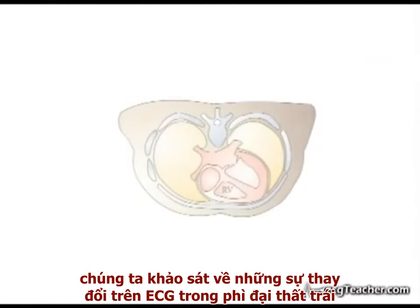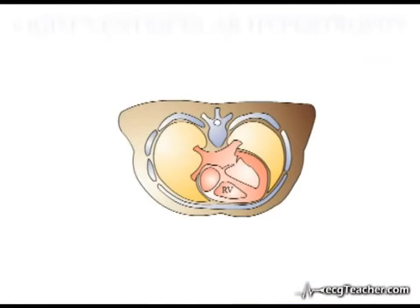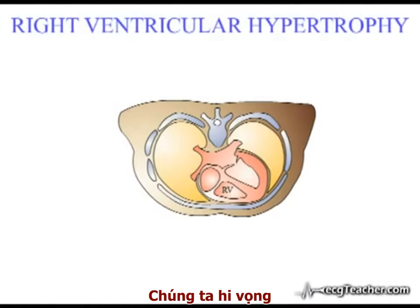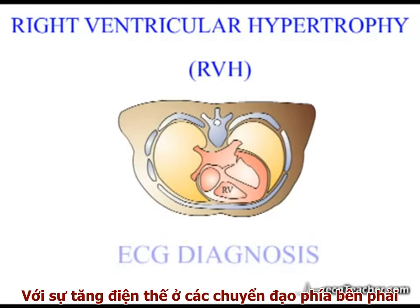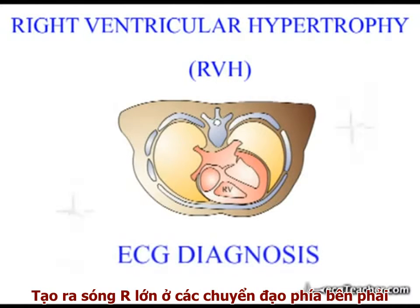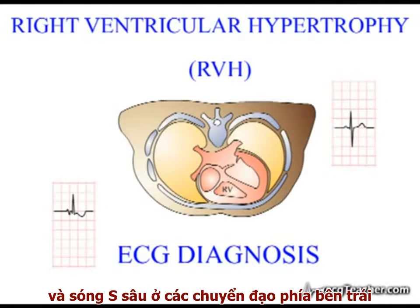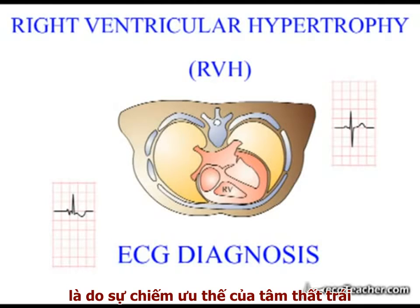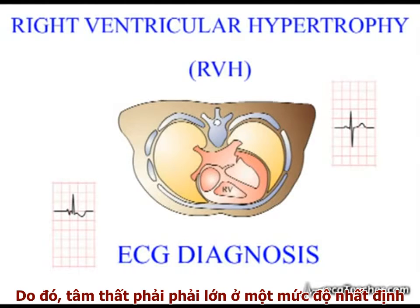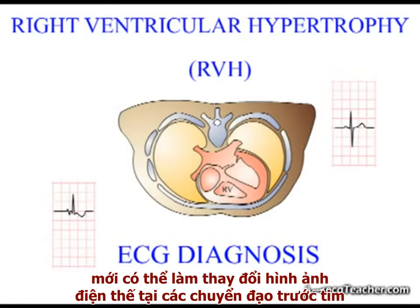In the previous video, we went through the ECG changes associated with LVH in some detail. In right ventricular hypertrophy, we would predict that the opposite process to LVH occurs, with increasing rightward voltages generating abnormally large R waves in the right-sided chest leads and deep S waves in those on the left. While this pattern is seen, because of the dominance of the left ventricle in the formation of the QRS complex, the right ventricle has to enlarge to a very substantial degree to significantly alter QRS voltages in the chest leads.